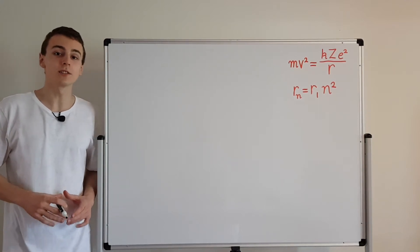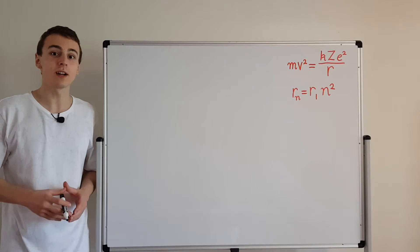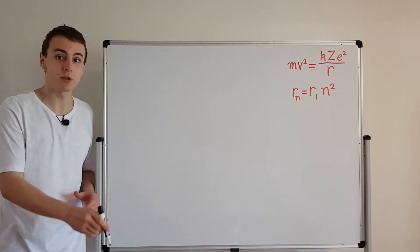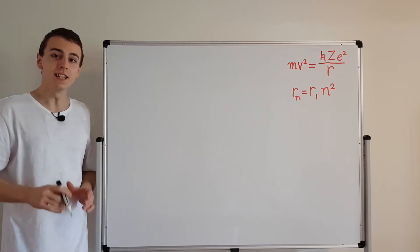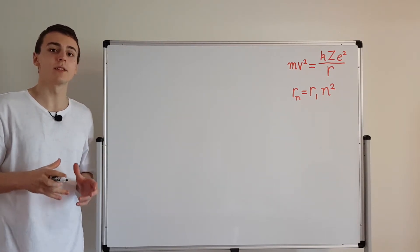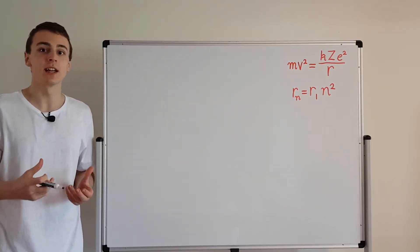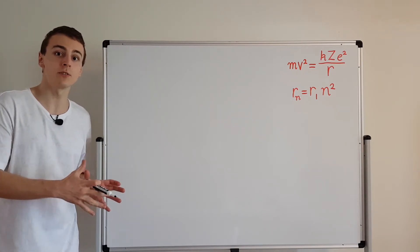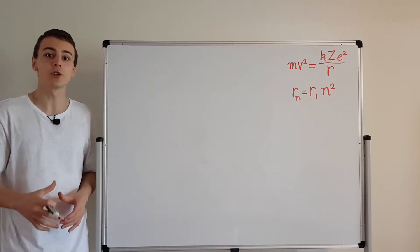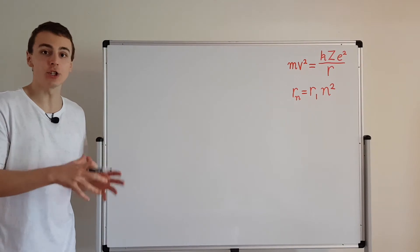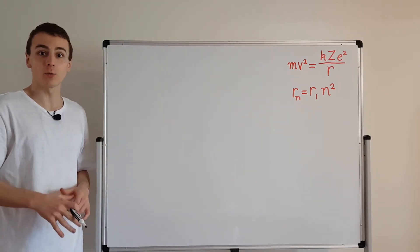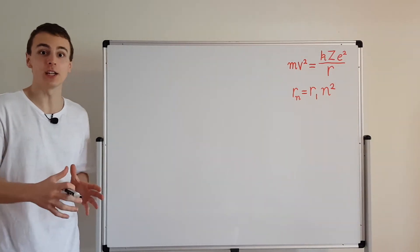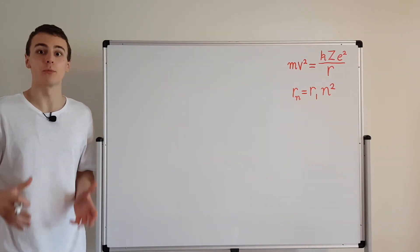This video is part of a playlist on quantum mechanics. You can find the link to the playlist in the description below, or you can click on this. In this video, I'm going to use some of the equations and relationships that we've derived in previous videos, and I'm going to derive a relationship between the energy and some other constants and variables. So we're actually deriving an expression for the nth energy of an electron in the Bohr model.